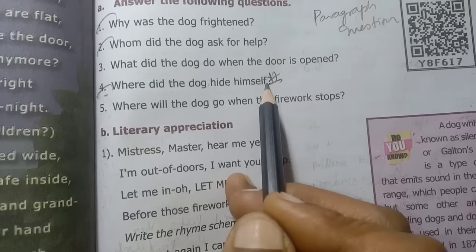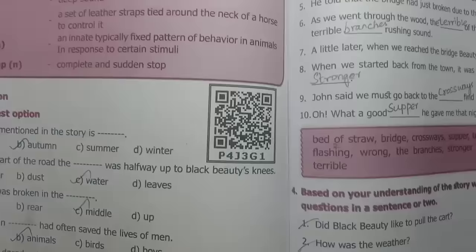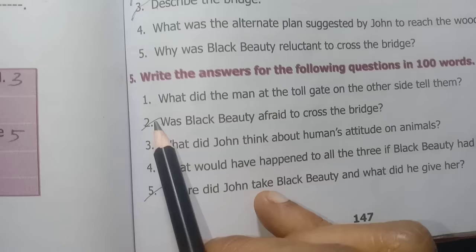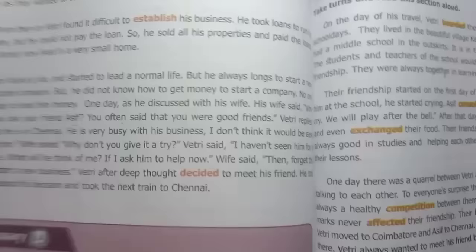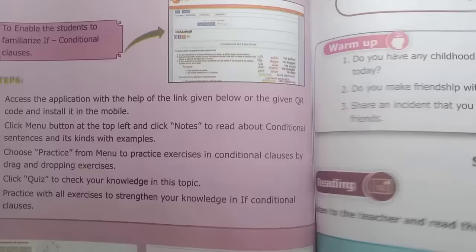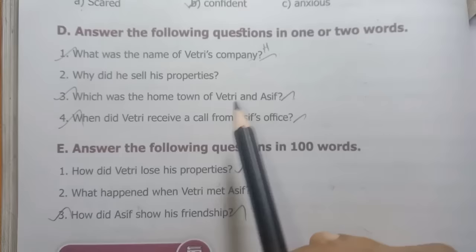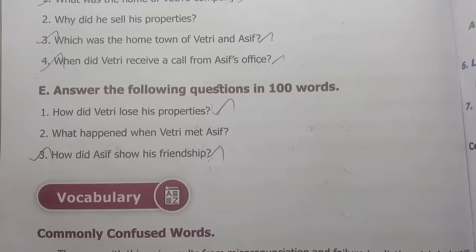Book back exercise. Next, conditional sentences. Go through. Next, Firework Night — why was the dog frightened? First, second, and fourth — this is important question. Third one is important and fourth one is important. In 100 words, first and third one is important question.